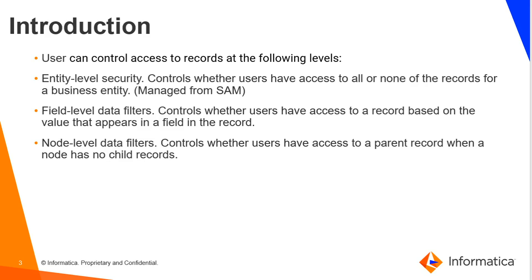Field filters work by matching certain values — when matched, we can give permission or deny permission to certain roles to either view or block access to that record. Node level filter sits on top of a parent. If you want to restrict access to a parent when the child node has no data, we configure a node level filter. For example, if a party has an address only then you want to show this data to a user; if the party doesn't have an address, you don't want to expose the parent-level data either. So then we configure the node filter.